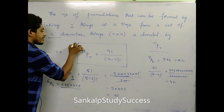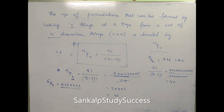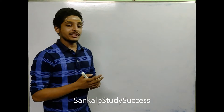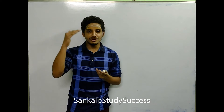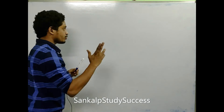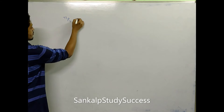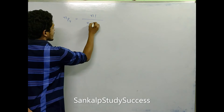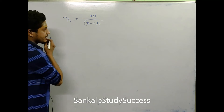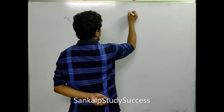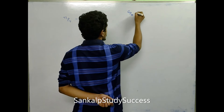This is a very very important formula — please note it. Now let us see some properties regarding nPr. Before going to properties of nPr, note that many use the formula nPr equals n factorial divided by n minus r factorial. Let us look at the proof of nPr.